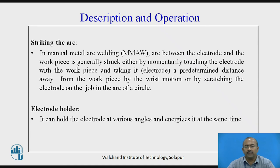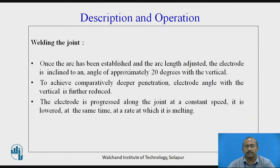The electrode holder can hold the electrode at various angles and energizes it at the same time. Once the arc has been established and arc length is adjusted, the electrode is inclined to an angle of approximately 20 degrees with the vertical. To achieve comparatively deeper penetration, the electrode angle with the vertical is further reduced. The electrode is progressed along the joint at a constant speed and lowered at the same rate at which it is melting.